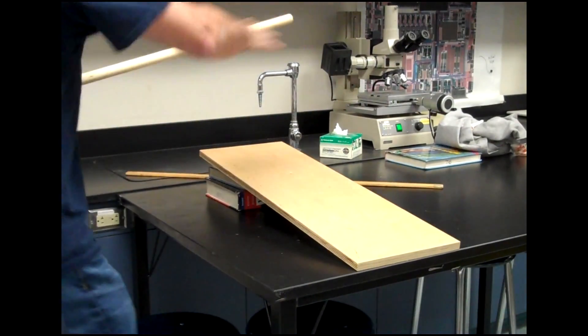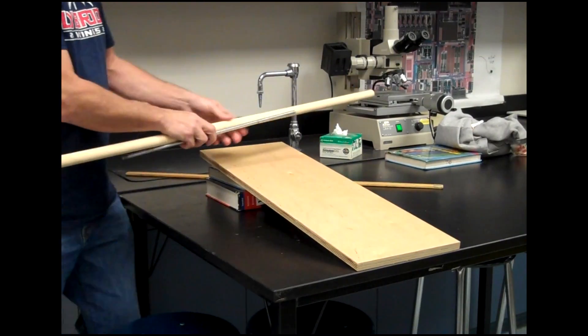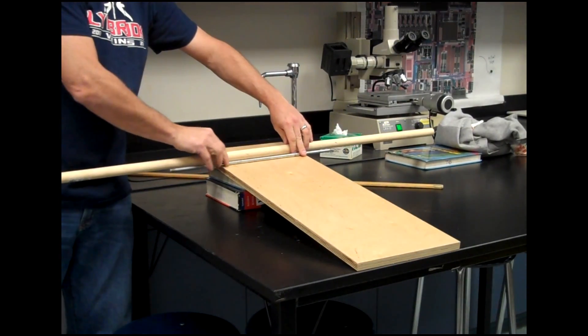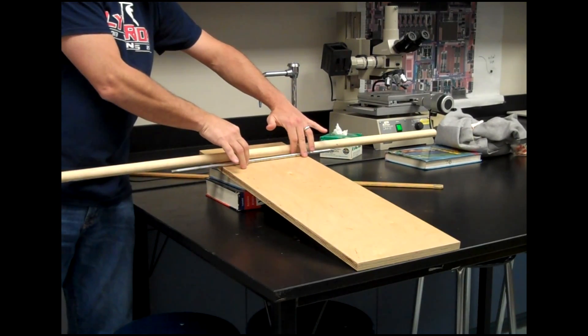Now, I don't have a long enough ramp to put them side by side, but I'll just put them one in front of the other, and they should maintain that same spacing all the way down the ramp if they, in fact, roll at the same speed, right?